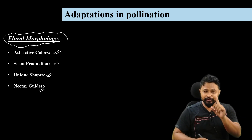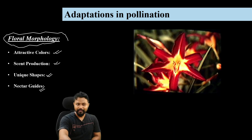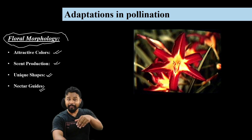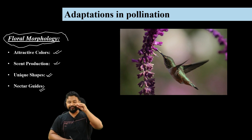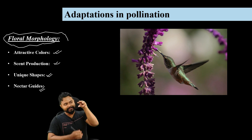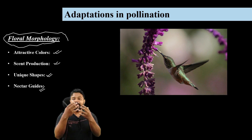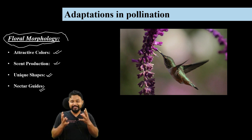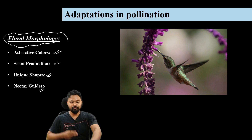For successful pollination, flowers have attractive flowers with specific shapes — even adapted to attract birds. Pollinators come, they change and collect from the flower, and then transfer pollen from one flower to another.